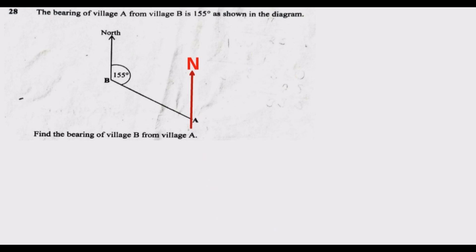So we need to find the bearing of village B from village A. What we need to find is this angle like I'm showing you here. So to find the answer for this one, we can use two ways. I'm going to show you the two different ways.